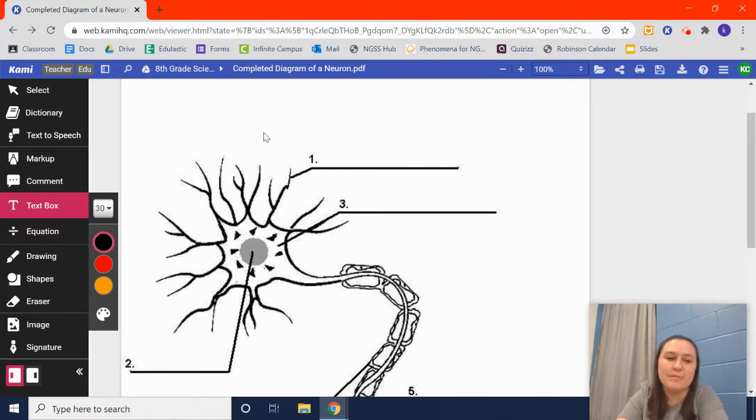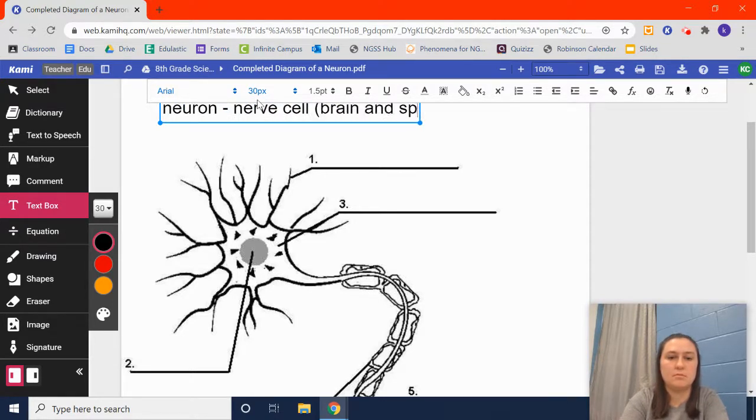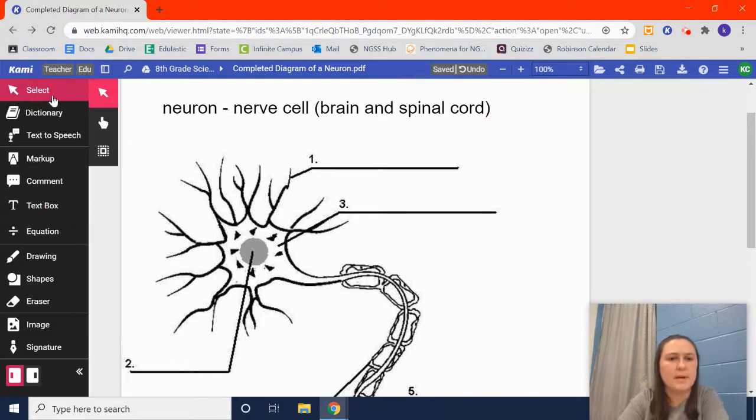So, we're going to label a neuron. To start though, we need to figure out what a neuron is. And basically a neuron is a nerve cell. So, we're going to go to our text box here and we're going to type that in. I'm going to go ahead and put brain and spinal cord there. Neurons are the cells that make up your brain and spinal cord.